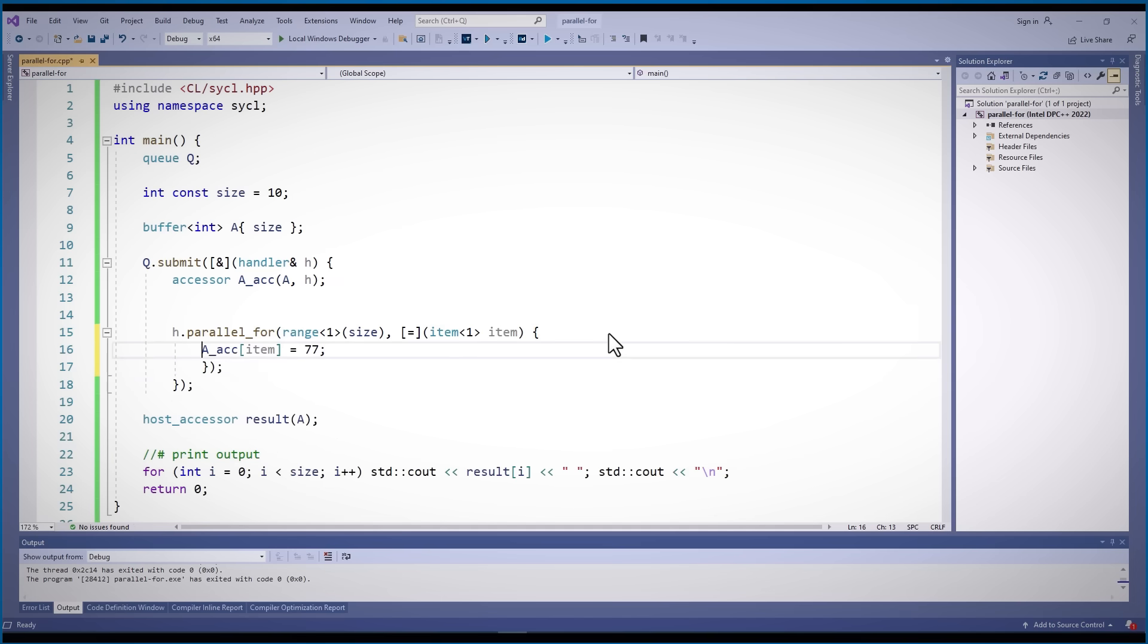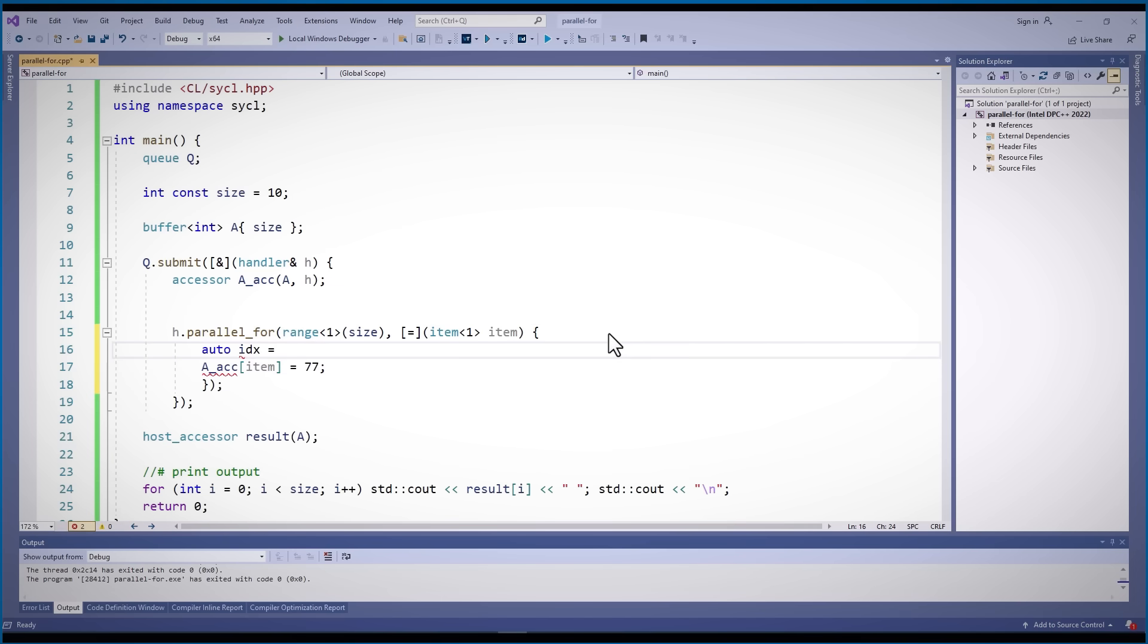For example, you can get the item id, but also linear id, offset or range. Which give you much more flexibility to give specific directions for each instance of the kernel.